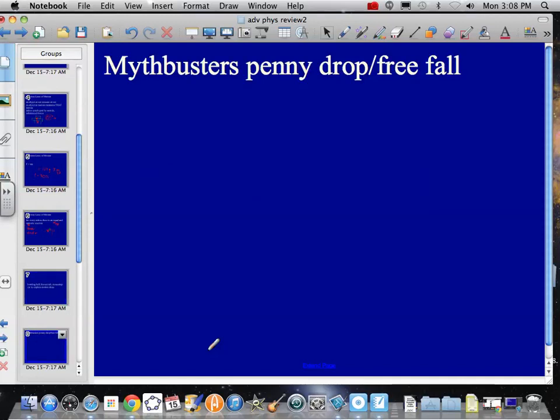Mythbusters did a penny drop, free fall lab kind of thing. What did you find out with the penny drop? Everything wants to fall at the same rate. But there's aerodynamics involved that messes that rate up. It's got a maximum, 9.8 meters per second squared. We know that. Because that's gravity on Earth. If you're just dropping something, it shouldn't be accelerating any faster than that.